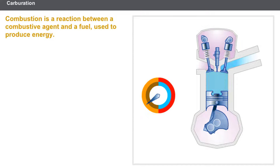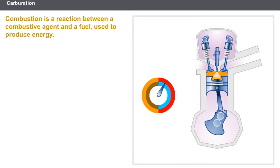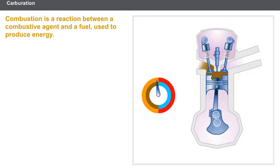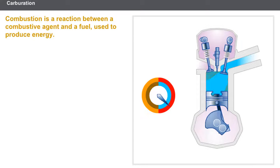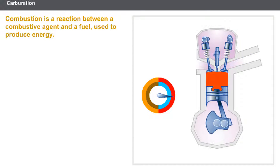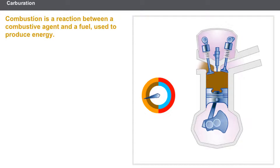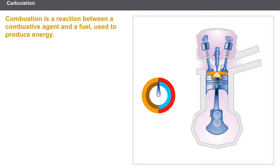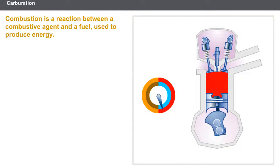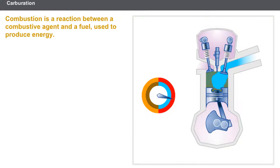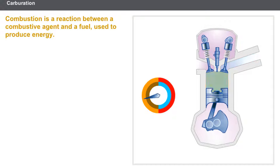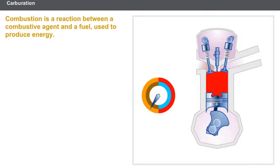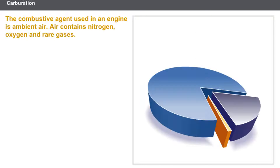In a four-stroke engine, only the combustion stroke powers the engine. This power stroke is caused by a pressure increase due to combustion. Combustion is a reaction between a combustive agent and a fuel used to produce energy. The combustive agent used in an engine is ambient air.